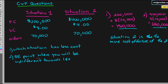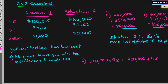The last question: what is the breakeven point where you'd be indifferent between choosing situation 1 or 2? We set the cost functions equal to each other — $200,000 plus 8x equals $400,000 plus 4x — because we want to find the point where we're indifferent, meaning the costs must be equal.